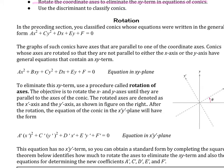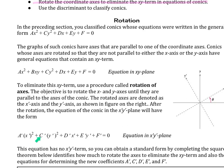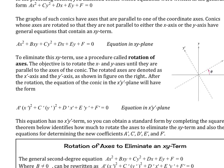The rotated axes are denoted as the x-prime axis and y-prime axis, as shown in the figure on the right. After the rotation, the equation of the conic in the x-prime y-prime plane will have the form: a′x′² + c′y′² + d′x′ + e′y′ + f′ = 0. This equation has no x-prime y-prime term — notice that it disappears. You can then obtain standard form by completing the square.